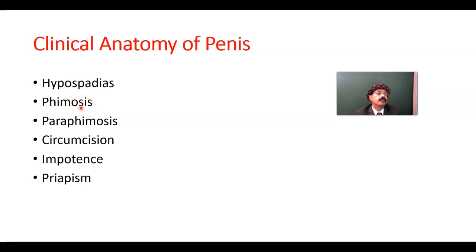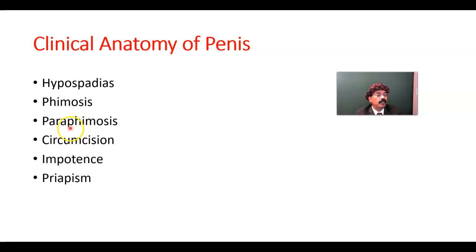Phimosis: that is the tightening of the foreskin over the penis, so the prepuce cannot be retracted — it is tightened to the glans penis. Paraphimosis: the prepuce or foreskin has folded back and goes beyond the corona glandis, and it constricts the neck of the penis. That may lead to gangrene of the glans penis. It is very difficult in this situation to get back the foreskin over the glans, because it makes a tight band around the neck of the penis.